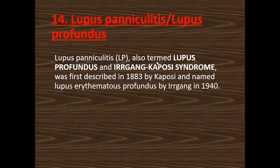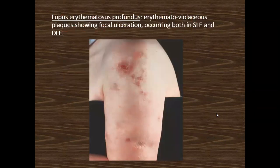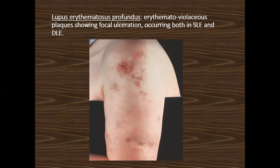Lupus paniculitis is also called lupus profundus, and another name is Irgang-Kaposi syndrome. The clinical appearance of most paniculitis is similar: initially erythema, then a little dusky, followed by induration, tenderness, ulceration, and later atrophy and scarring.